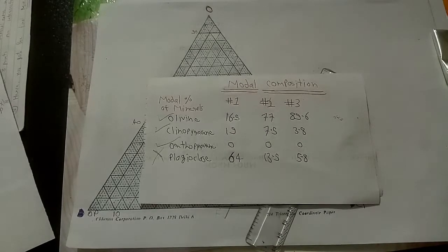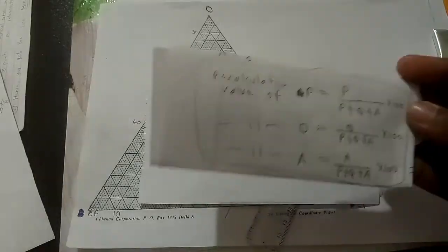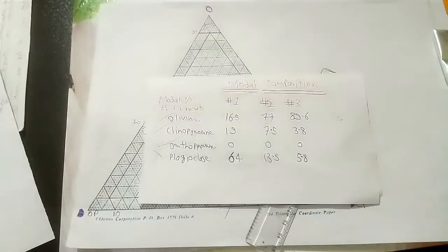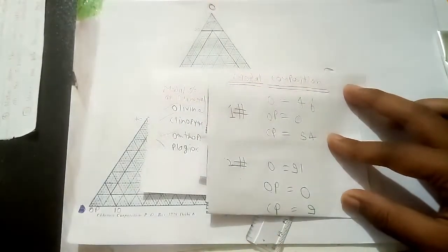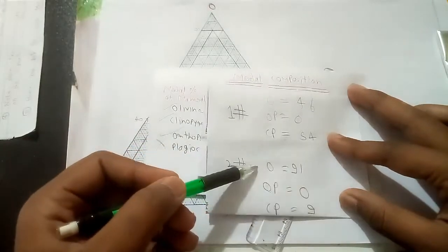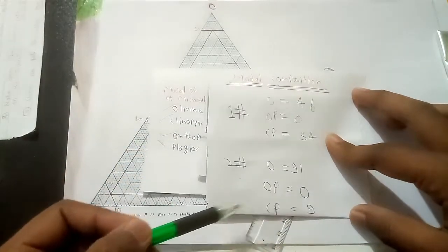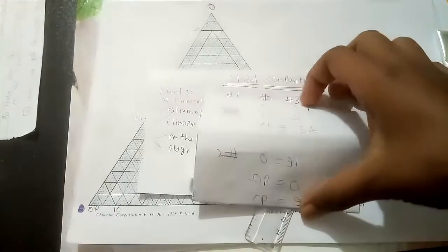Now we will do second sample. That is 77 olivine and 7.5% CP. OP is 0%. Again we have to recalculate them first. This is basic formula. So after recalculation I got the values. For second sample, olivine equals to 91, orthopyroxene equals to 0 and clinopyroxene equals to 9. So we will now plot it.